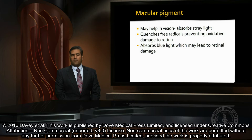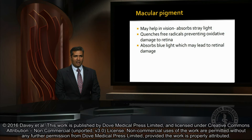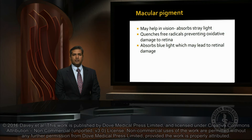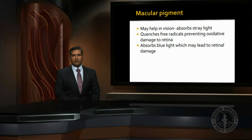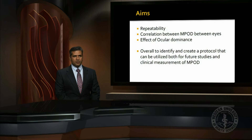Macular pigment in the retina helps vision as it absorbs stray light. It quenches the free radicals, thus preventing oxidative damage to the retina, and it also absorbs the blue light which may lead to retinal damage.